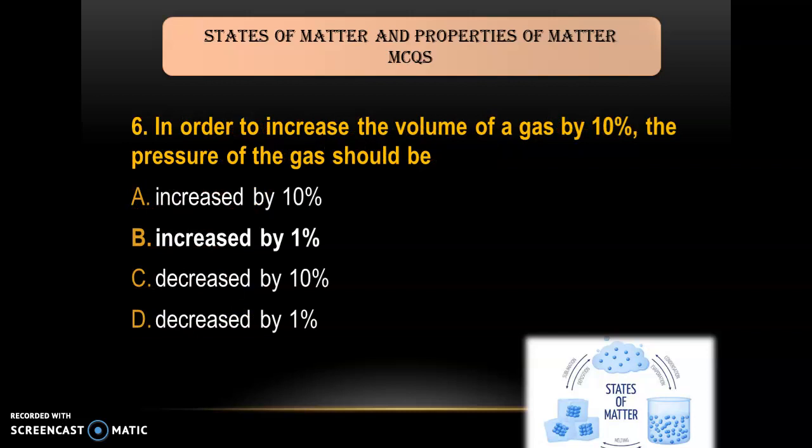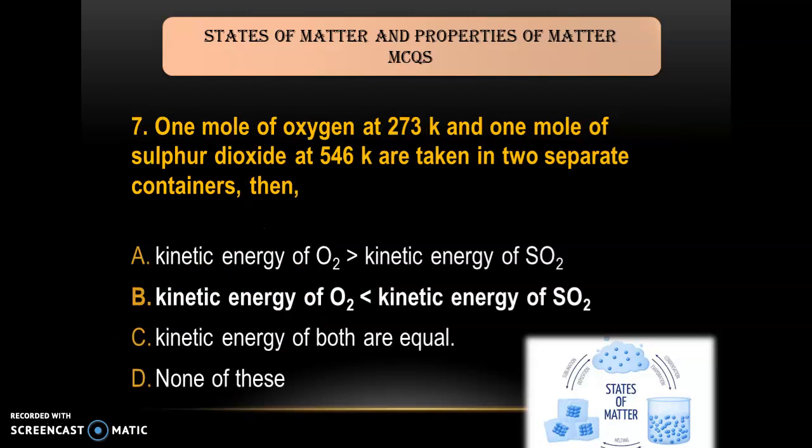Question 6: In order to increase the volume of a gas by 10 percent, the pressure of the gas should be — A) increase by 10 percent; B) increase by 1 percent; C) decrease by 10 percent; D) decrease by 1 percent. As we know, if you have to increase the volume, you have to decrease the pressure. So the answer is C — decrease by 10 percent.